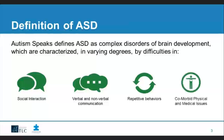The last area is comorbid physical and medical issues. The core symptoms of social interaction problems, communication difficulties, and repetitive behaviors are often accompanied by other medical conditions. Autism Speaks outlines associated neurological issues including sleep deficits, seizures, mood disorders, anxiety, hyperactivity, and attention problems. Associated systemic issues can include GI disorders and immune dysfunction. So on top of the social, communication, and behavioral challenges, some children and families also have these medical issues to deal with.